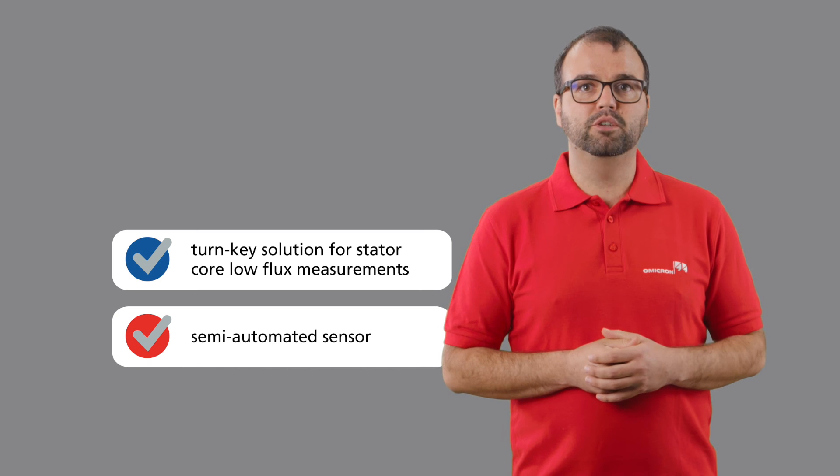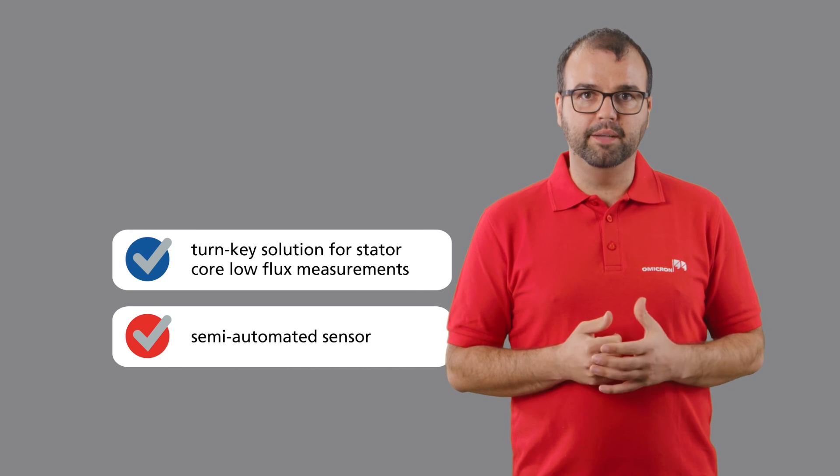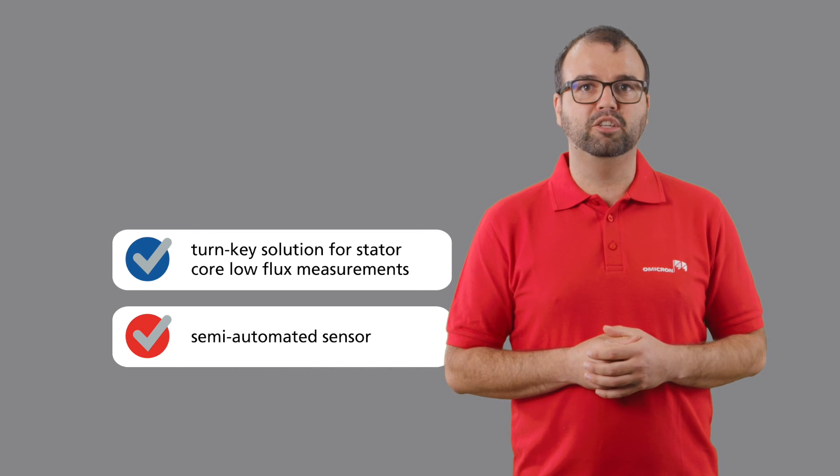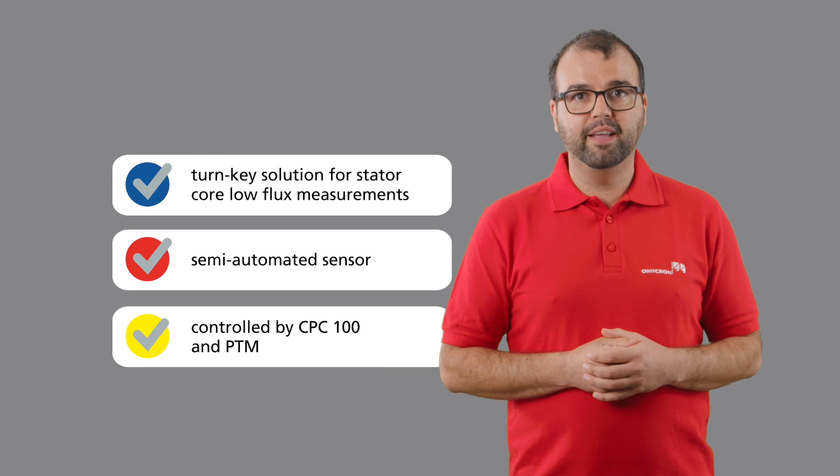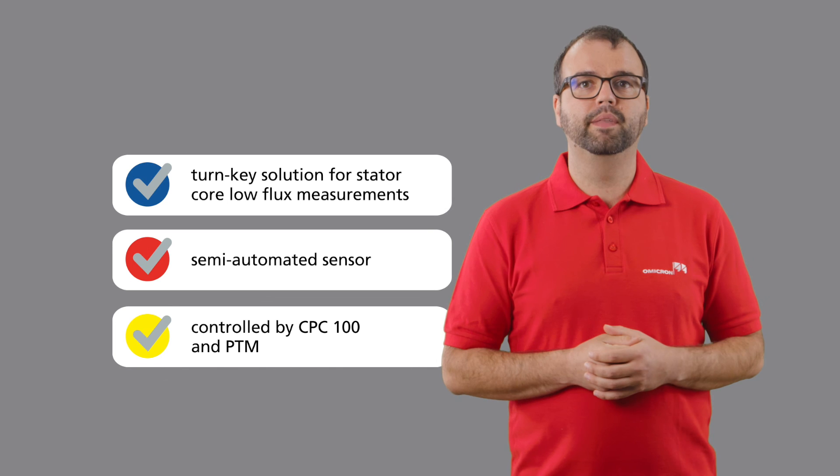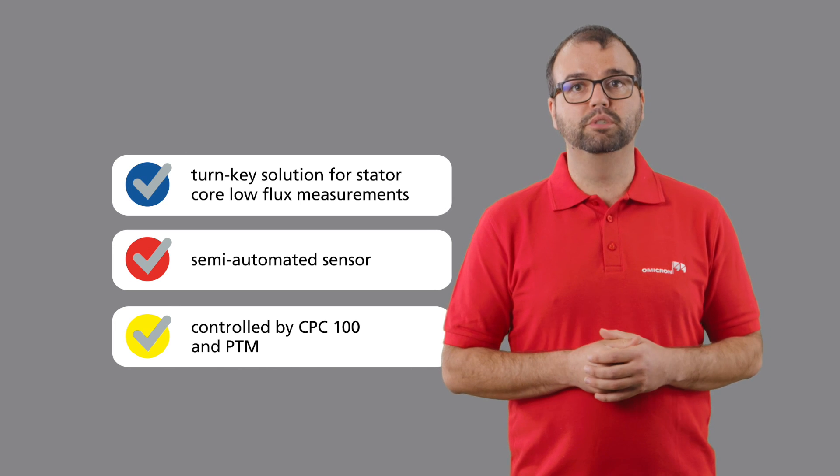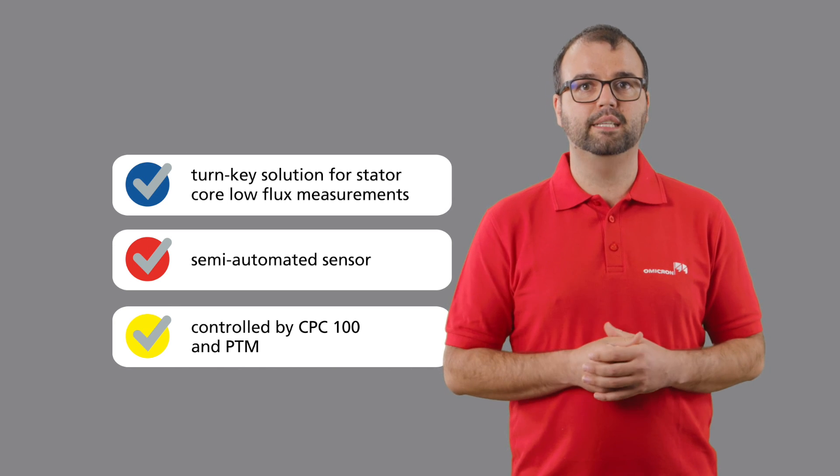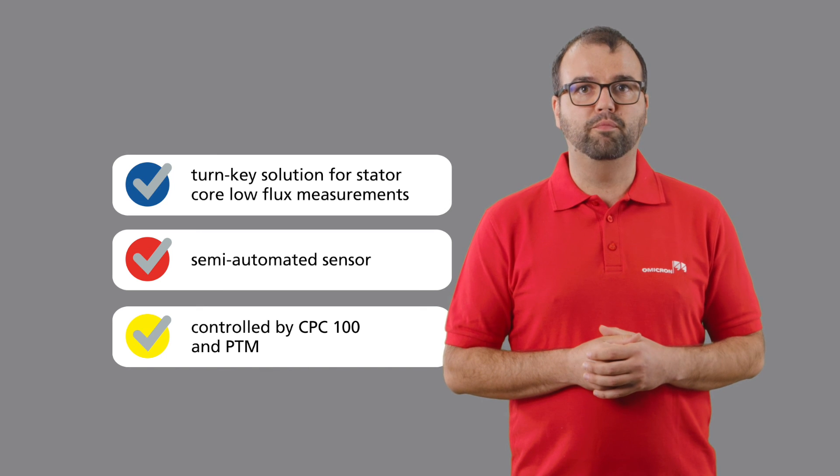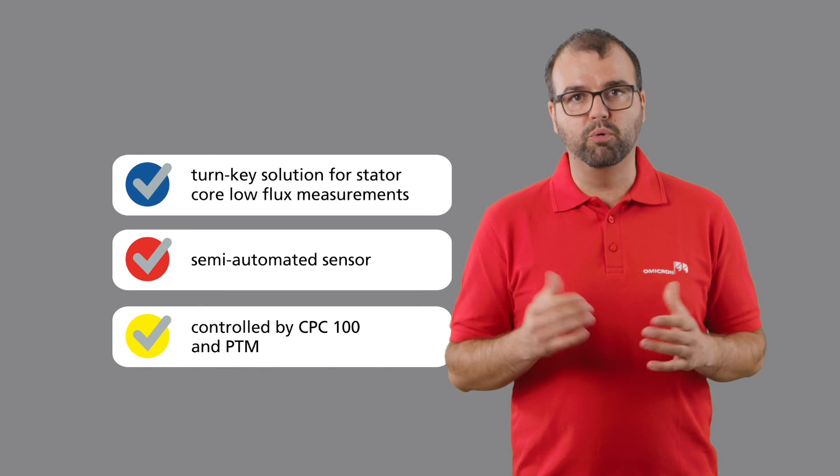Number two, a semi-automated sensor movement improves the usability and ensures time-saving electromagnetic imperfection testing. And number three, everything can be controlled by our PTM. This includes guidance through the test, intuitive results analysis by helps of plots and heat map, and simple reporting.